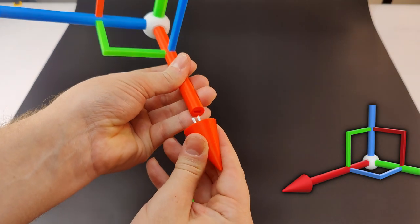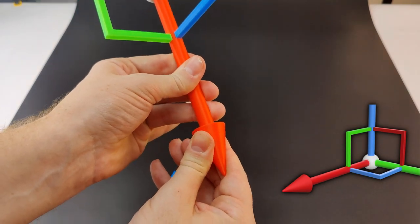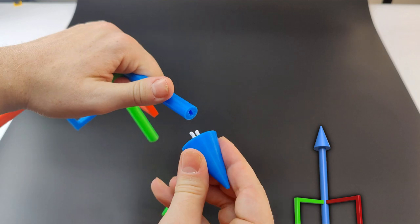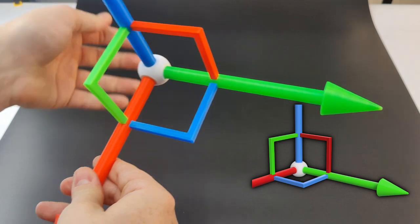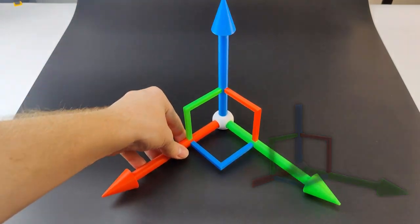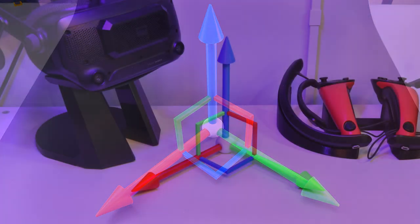Now we'll just take each of the colored arrows and connect them to their respective axis. And you have fully assembled your 3D transform gizmo.